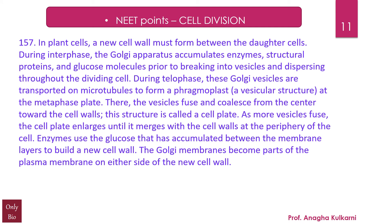Point number 157: In plant cells, a new cell wall must form between the daughter cells. During interphase, the Golgi apparatus accumulates enzymes, structural proteins, and glucose molecules prior to breaking into vesicles and dispersing throughout the dividing cell. During telophase, these Golgi vesicles are transported on microtubules to form a phragmoplast — a vesicular structure at the metaphase plate. There, the vesicles fuse and coalesce from the centre towards the cell walls, forming a structure called the cell plate.